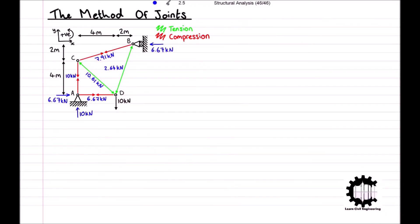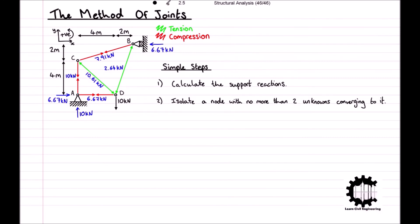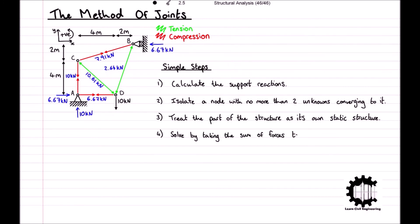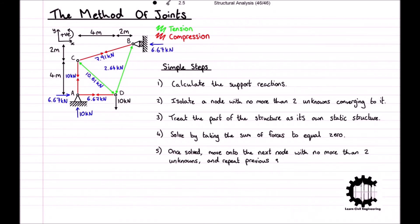We can now see the completely solved truss structure with the magnitudes of internal forces for each bar and whether each bar is in tension or compression. To summarize the method of joints: first, calculate the reactions at the supports; then isolate a node with no more than two unknowns converging to it; treat that part as its own static structure and solve by taking the sum of forces equal to zero; move on to the next node and repeat. Remember, the two unknowns cannot be parallel to each other.